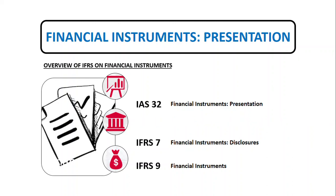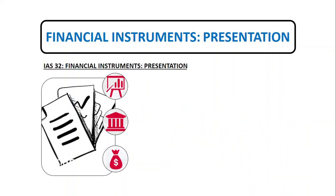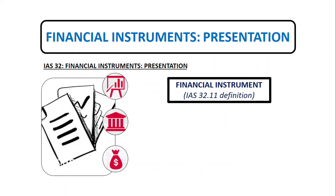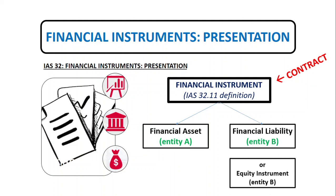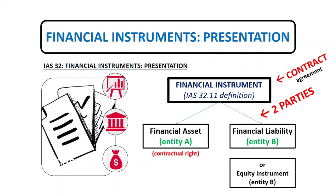A financial instrument is defined by IAS 32 as any contract that gives rise to a financial asset of one entity and a financial liability or equity instrument of another entity. There are two parties: first, there is a contract because there is an agreement, and then there are two parties — one with a contractual right to receive cash or another financial asset, and another with a contractual obligation to pay cash or deliver another financial asset.